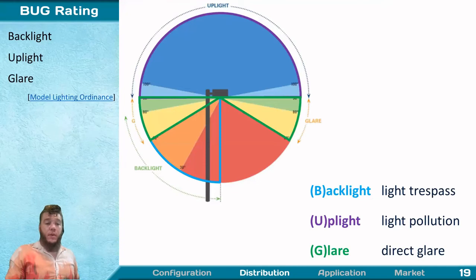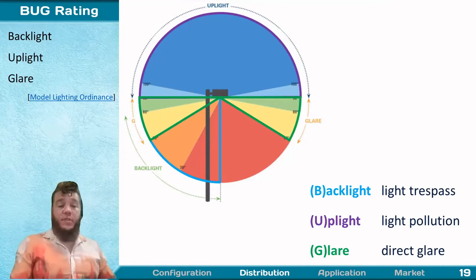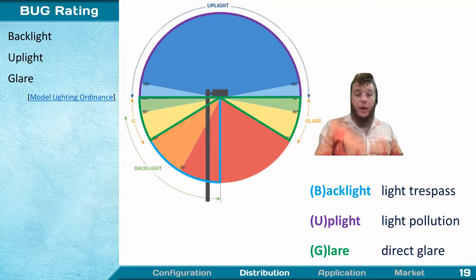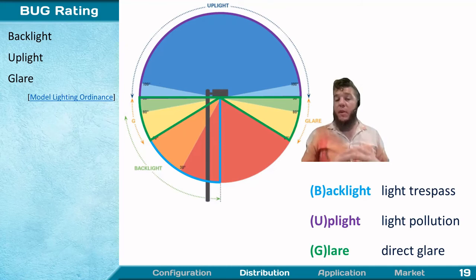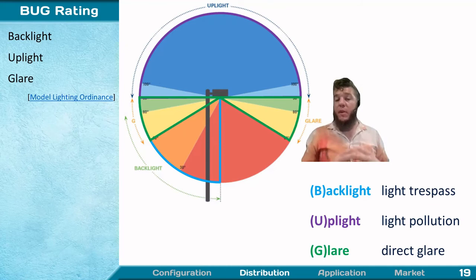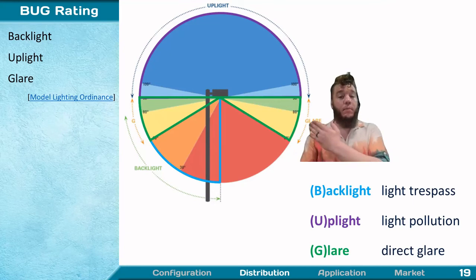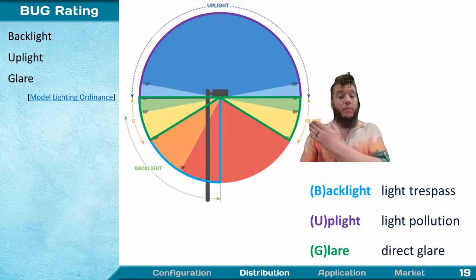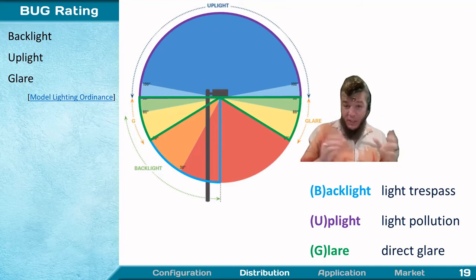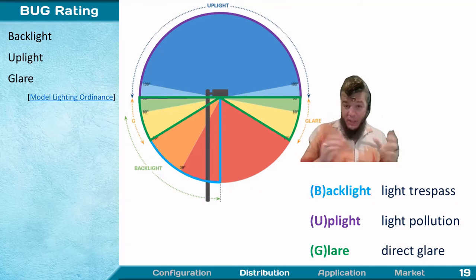BUG rating — Backlight, Uplight, Glare — is great for exterior luminaires. Backlight is light trespass into neighboring properties; uplight is direct light pollution (think stadium signs left on all night). The most important aspect is glare: the BUG rating defines glare angles from 60 to 90 degrees, with a special zone from 80 to 90 degrees being the worst. You really don't want to emit light at those high angles.